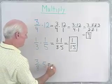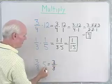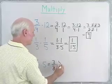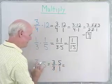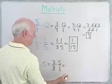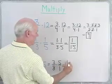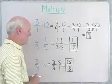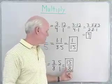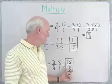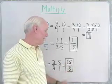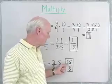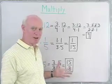For 3 eighths times 5, I want to make sure I'm multiplying fractions. Any number can be written as a fraction with a denominator of 1, so I'll write this as 5 over 1. That keeps me from making mistakes. 3 times 5 is 15, and 8 times 1 is 8. There are no common factors, so the answer is 15 over 8. This one doesn't reduce to lowest terms. You could write this as a mixed number, but since we're leading into algebra, improper fractions — where the numerator is larger than the denominator — are usually better to work with.